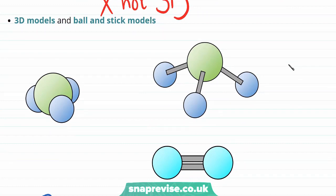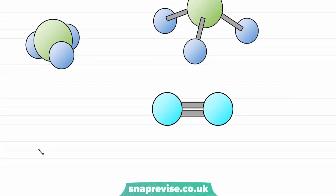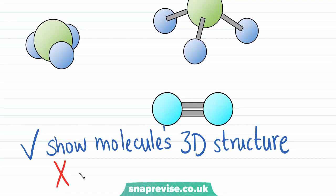The final way of drawing out a covalent molecule is to use something that's called a 3D model or a ball and stick model. Rather than drawings, these are actual models that you can make. And the obvious benefit of these is that they show the molecule's 3D structure. However, these can be difficult to make and confusing for large molecules, so they're not so useful for these.